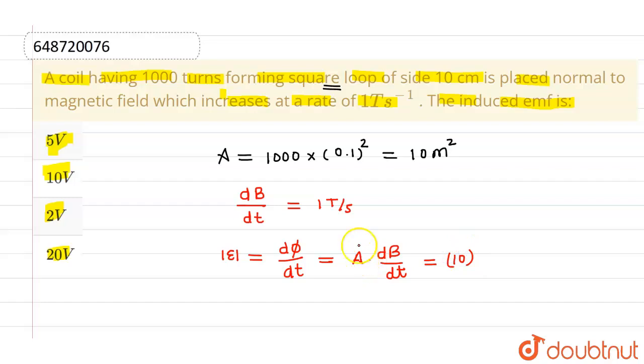So this will be 10 into 1 and this is coming out to be 10 volt. So induced emf is 10 volt which is given in option 2, so option 2 is correct and rest all options are incorrect. I hope you understood, thank you.